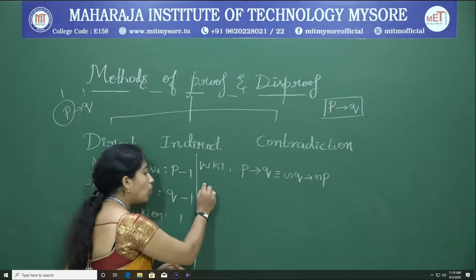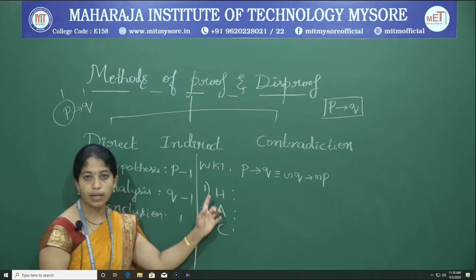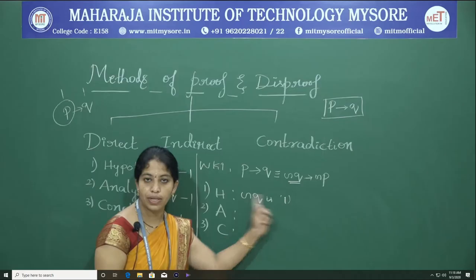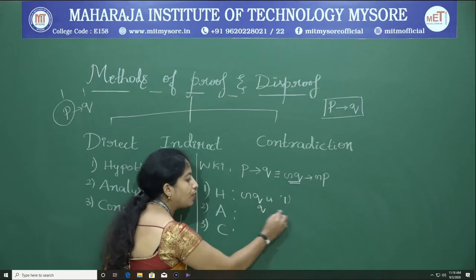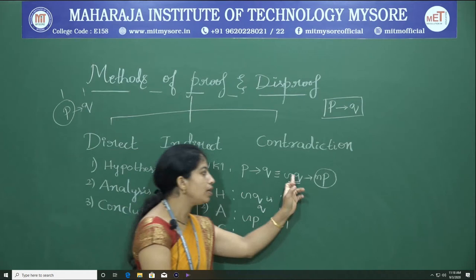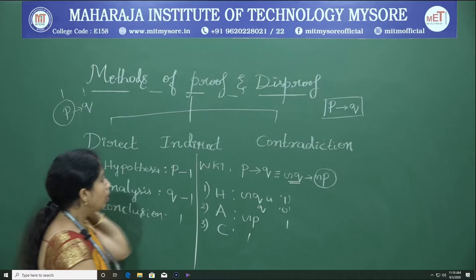Again there are three steps: hypothesis, analysis, and conclusion. In hypothesis, we assume that negation Q is true, or equivalently Q is false. In analysis, we prove that negation P is also true, or P is false. Since negation Q is true and negation P is true, true conditional true is true, meaning the given conditional statement will be true. This is indirect proof.